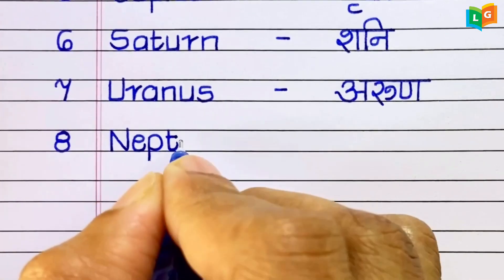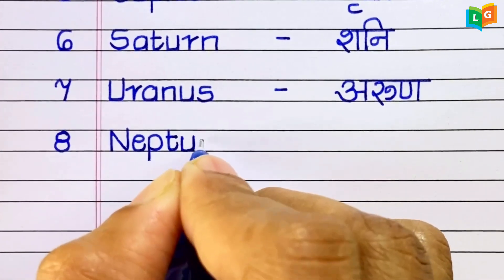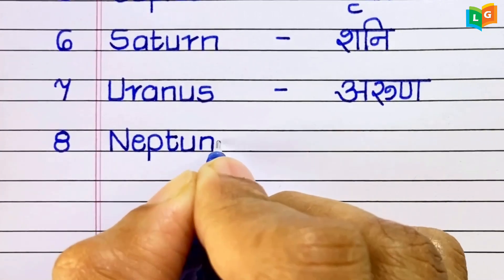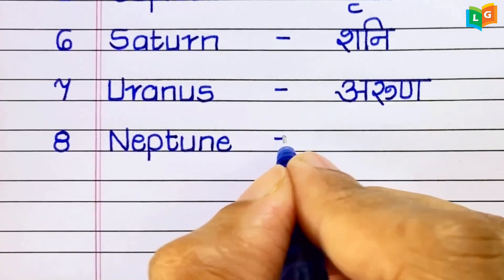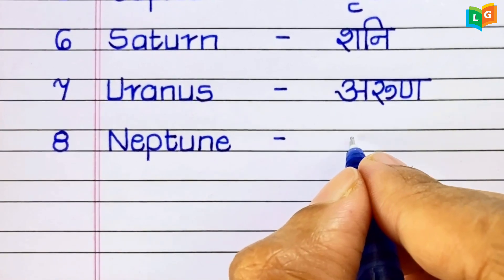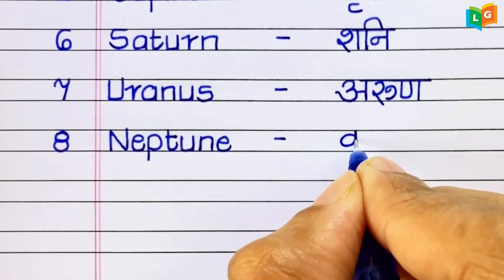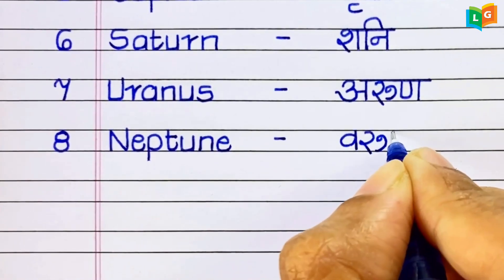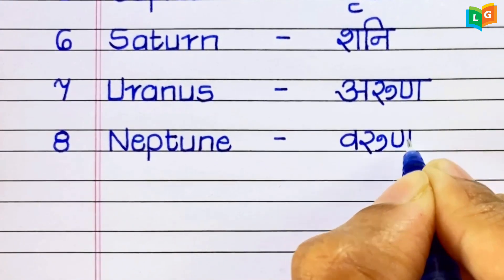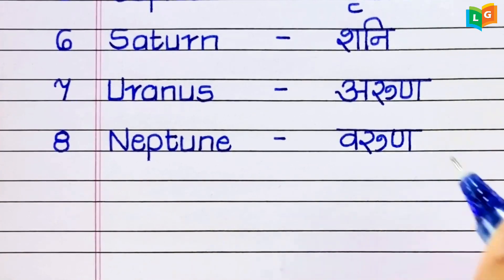Next, N-E-P-T-U-N-E, Neptune. Neptune means Varun Graha.